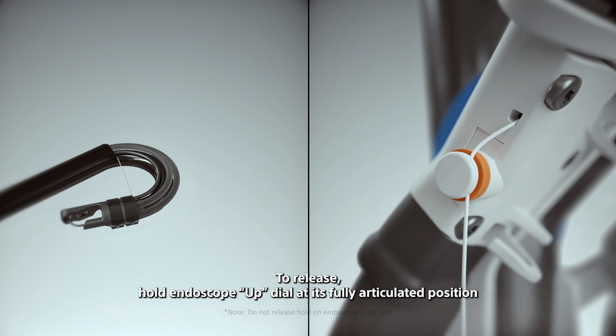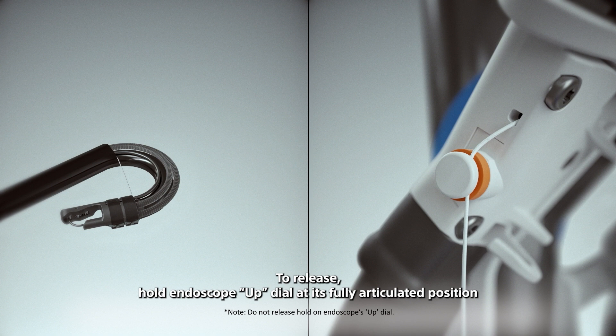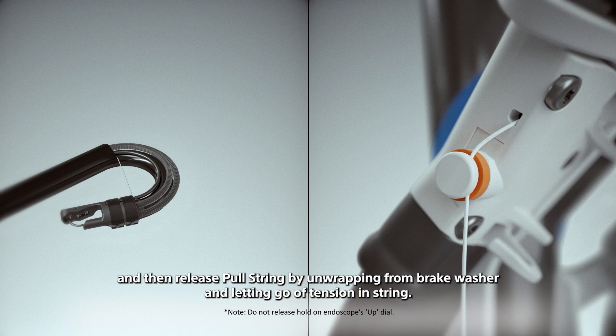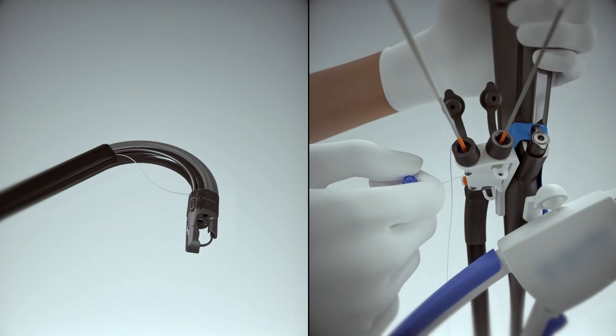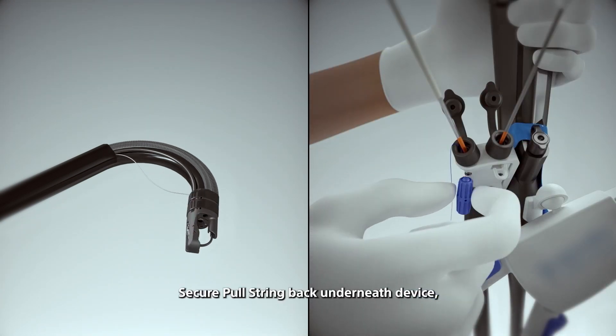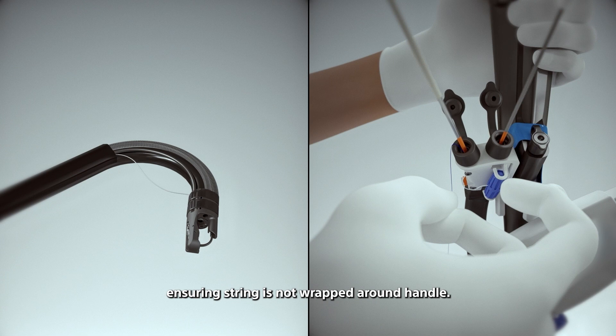To release, hold endoscope up dial at its fully articulated position and then release pull string by unwrapping from brake washer and letting go of tension and string. Secure pull string back underneath the vice, ensuring string is not wrapped around handle. Release scope dial.